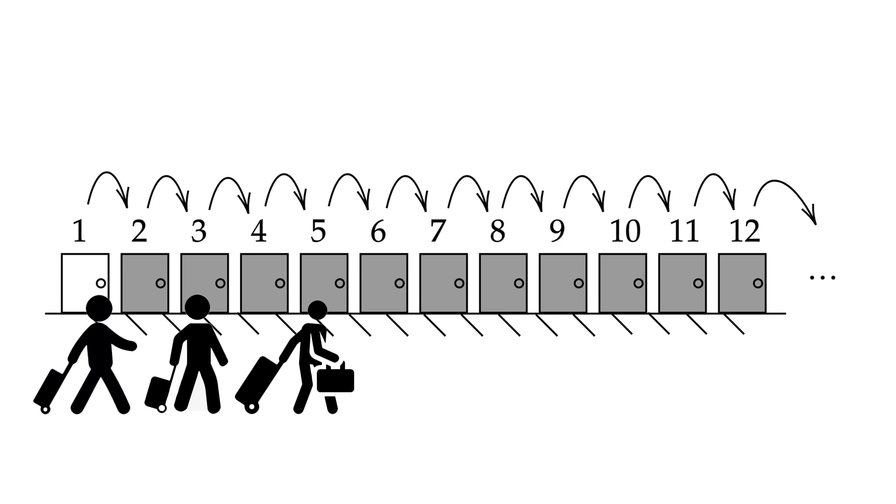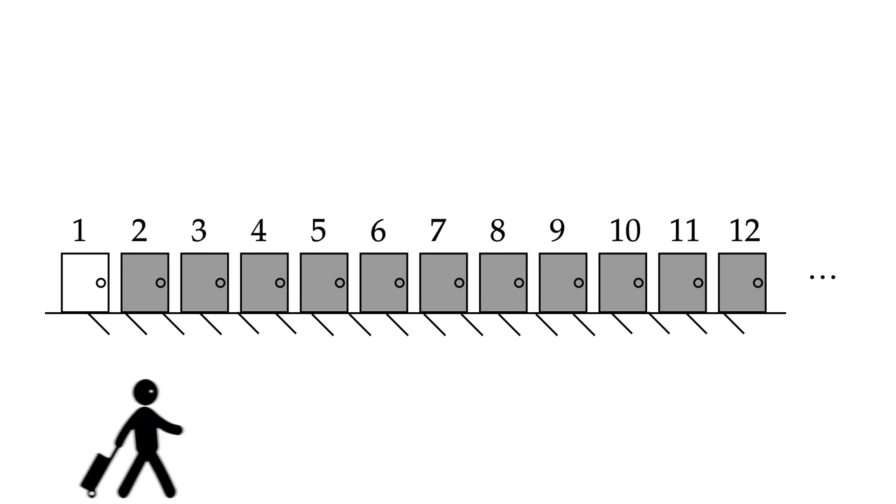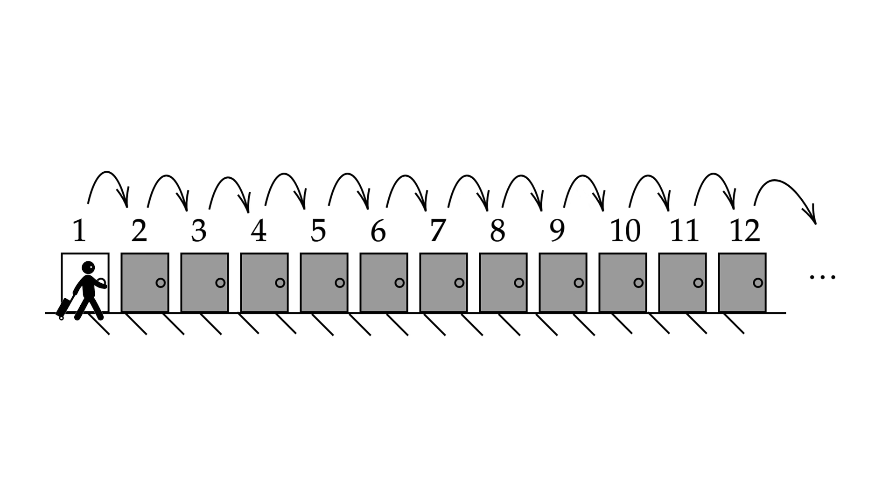Here's how it works. If just one extra guest arrives, the hotel can make room for them and all the existing guests by moving everyone to the next room. So, the person in room 1 moves to room 2, the person in room 2 moves to room 3, and so on. This clears up room 1 for the new guest.